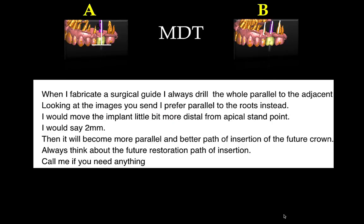Who is better to ask than a lab technician about the ideal implant position? My technician says make it parallel to the roots. The more parallel it is to the roots and to the adjacent contacts, the better the path of insertion of the future crown — and we're assuming screw-retained. That's such an important piece of information I was not taught, and it shows how important it is to consult your lab technician when planning implant surgery. In this question A or B, my lab technician chooses B because B gives a better path of insertion of the crown.